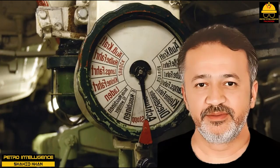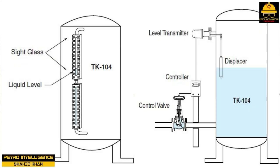Direct level measurement instrumentation is in physical contact with the surface of the fluid and may calculate the product surface level from a specific point of reference. Direct instruments include sight glasses, floats, displacers, and probes. A sight glass is a transparent tube with graduated markings mounted on the side of a tank. In a float and tape device, a float rests on the surface of the fluid and the tape moves up and down depending on the level. Displacers are buoyancy devices or weights that can be linked to a transmitter to control flow.